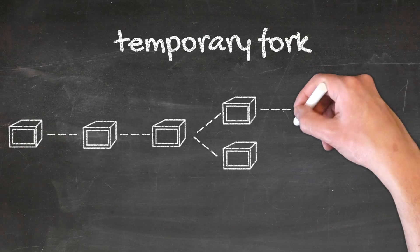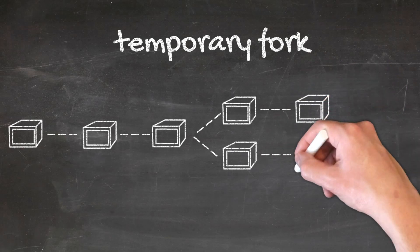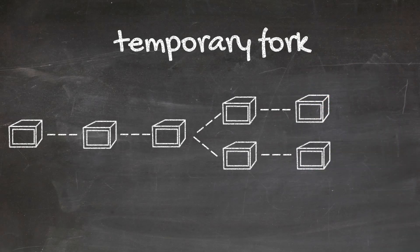Suddenly, there are two chains with different blocks and different transactions, and the network has to decide which one is the right chain.